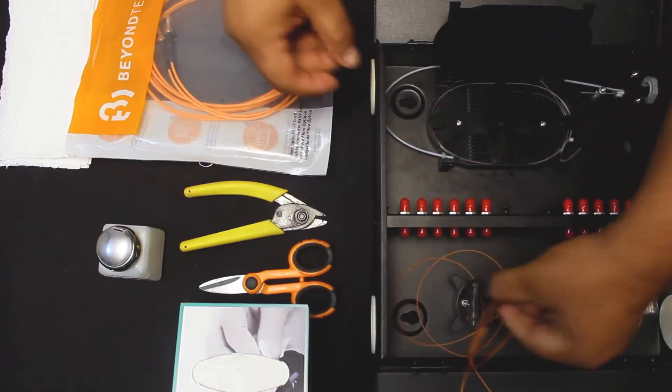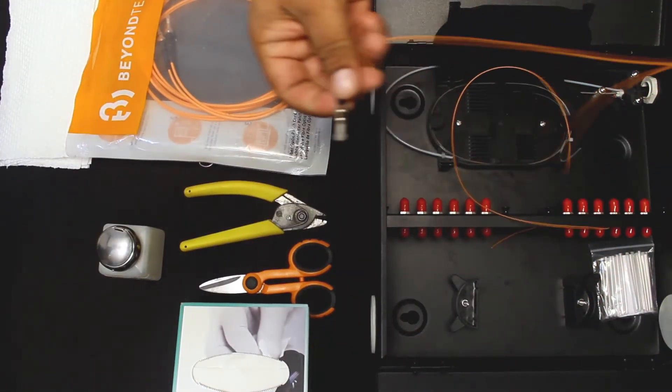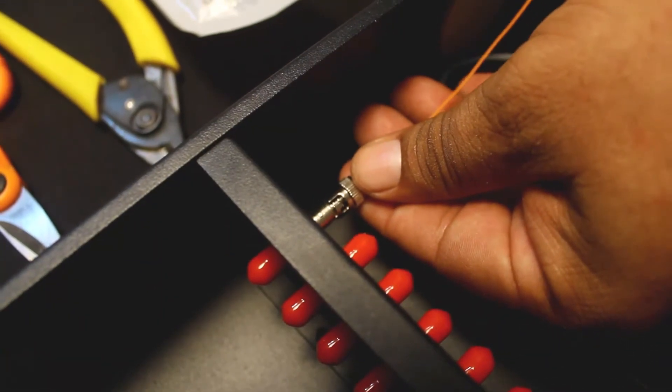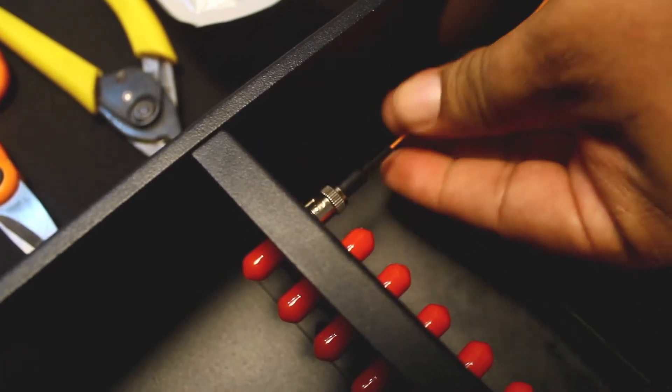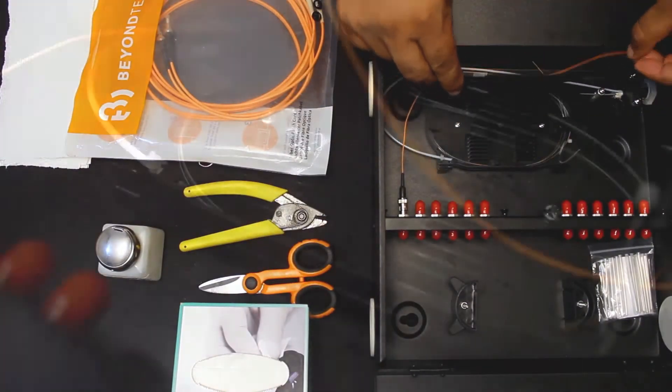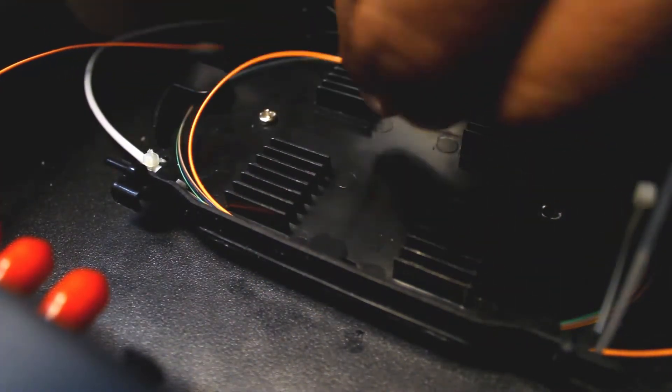For this demonstration, we are using a pigtail. Place the fiber on top of the other splice chip's row. Trace the other fiber to be terminated inside the splice tray as well.